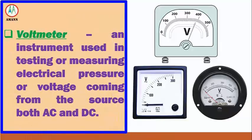Voltmeter is an instrument used in testing or measuring electrical pressure or voltage coming from the source, both AC and DC.